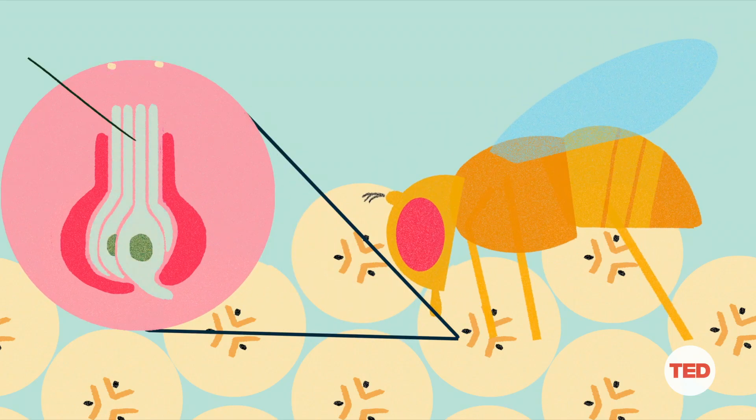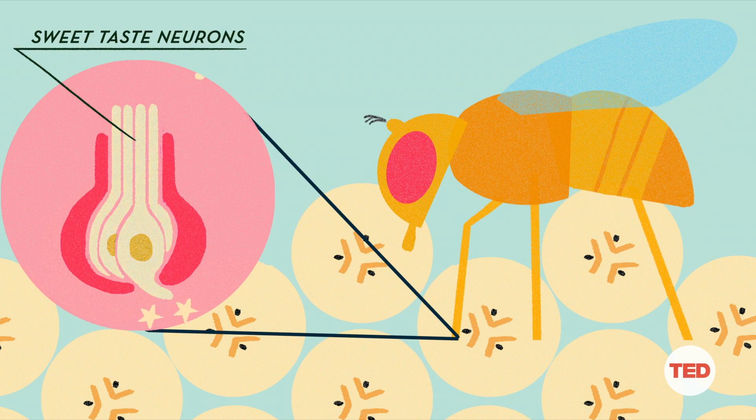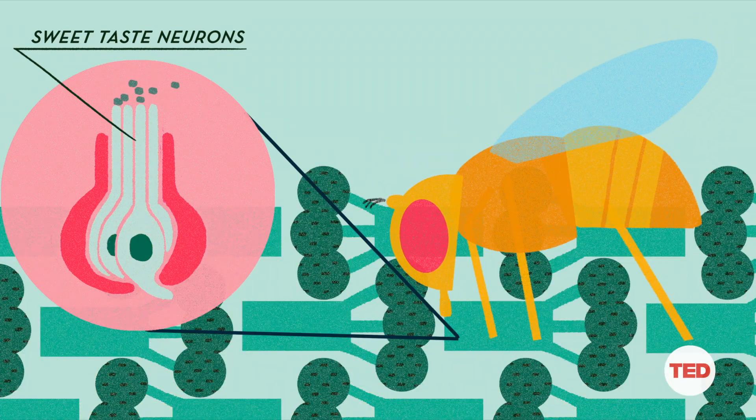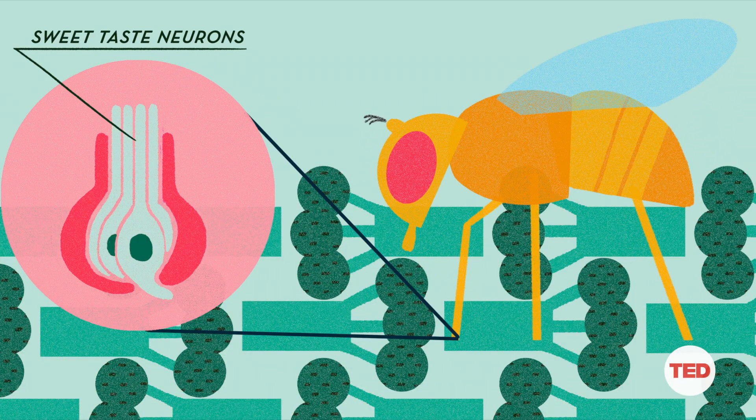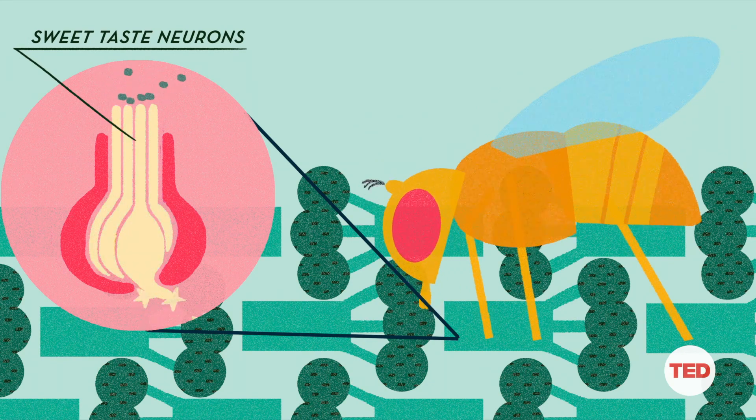So when a fruit fly eats a banana, its sweet taste neurons will fire. But when it eats broccoli, those same neurons stay pretty quiet. But what if we could force those sweet tasting neurons to fire every time the fruit fly eats broccoli? We may be able to get the fruit fly to like broccoli as much as he likes banana.